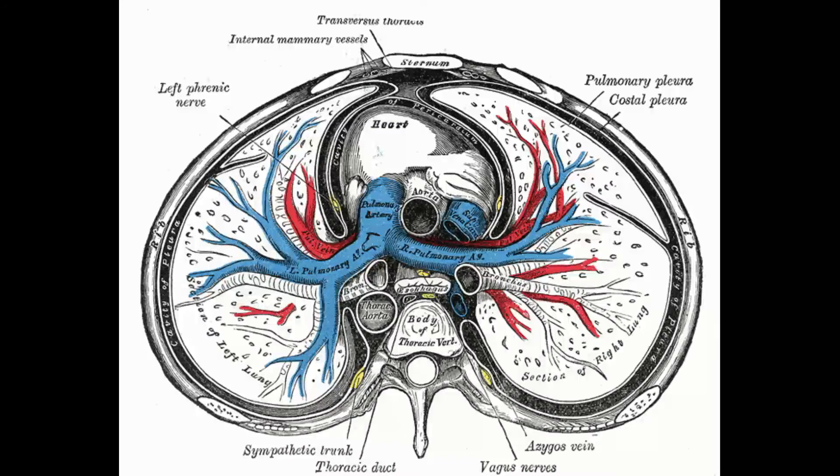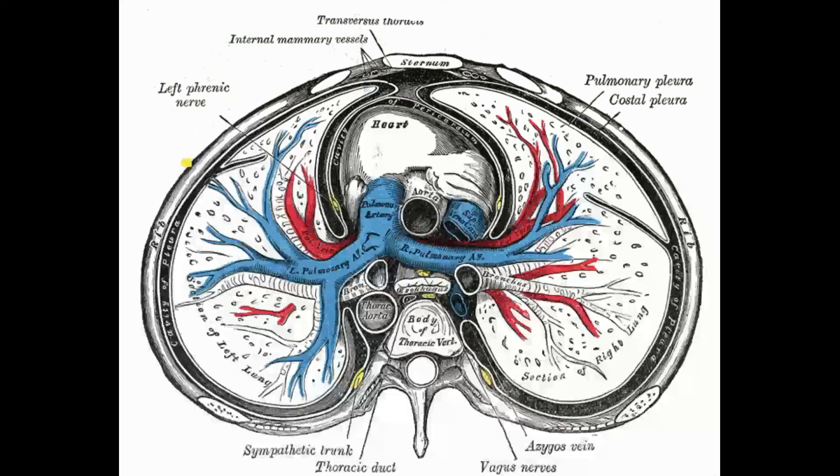T for transversus thoracis, S for subcostals, and D for diaphragm. Now on to the last part of this video: the contents of the thoracic cavity. You've got the thymus gland, the breasts, and the heart.